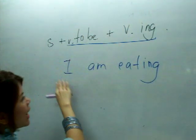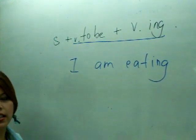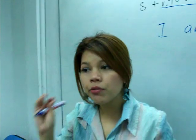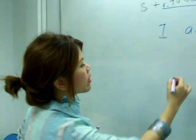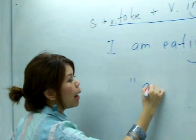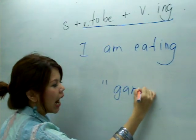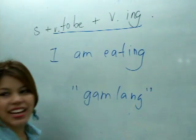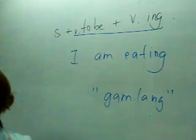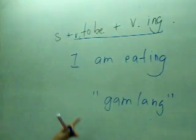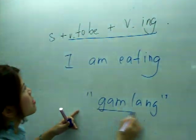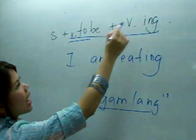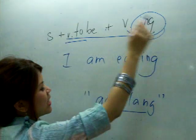In English: I am eating. In Thai language, it's very easy. We have the word กำลัง (kam lang). Kam lang is the equivalent of 'to be plus -ing' in English.